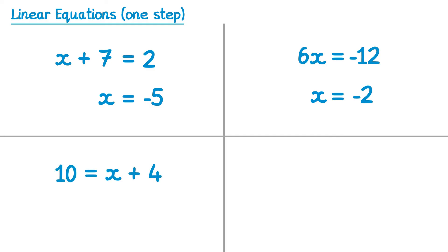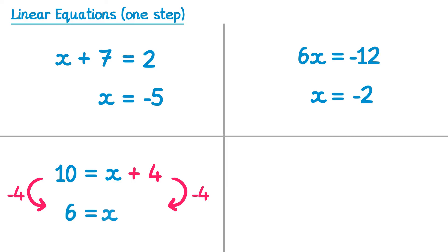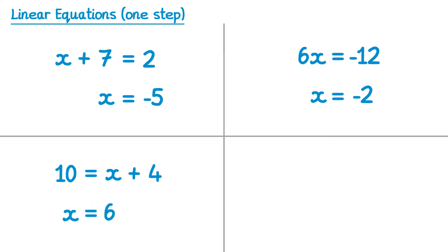In this next equation the x is on the right hand side instead. We're still going to use the same strategies, but we're going to deal with this plus 4. To do that I would subtract 4 from both sides. On the left hand side 10 take away 4 is 6, and on the right hand side the 4s will cancel leaving x. So we end up with 6 equals x, which looks like it's the wrong way around — we can just switch those around to give us x equals 6 as the answer.